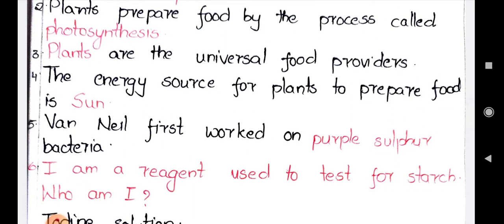The fifth bit is: Von Niel first worked on blank bacteria. Von Niel is the scientist who said that during the process of photosynthesis, carbohydrates are synthesized, and along with carbohydrates, water molecules as well as oxygen are also released. He did experiments on purple sulfur bacteria and observed that, like plants, the purple sulfur bacteria also release oxygen — but in place of water, it releases elemental sulfur. So that's what he observed: he is the person who worked on the purple sulfur bacteria. Up to here, the five blanks are completed.